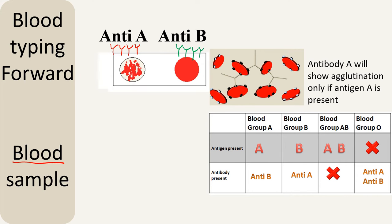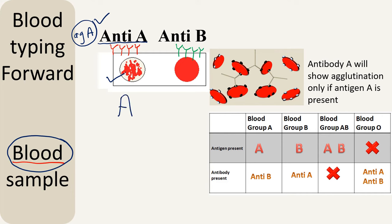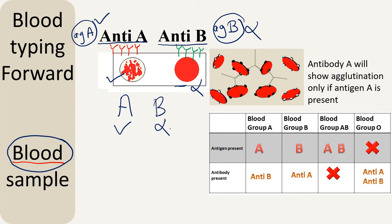We know that antibody A will only agglutinate in the presence of antigen A. Here, since we see agglutination, we can assume that this blood sample contains antigen A. Looking at the second droplet wherein we have added antibody B, there is no agglutination. We know antibody B can interact with antigen B, which means that this blood sample does not contain antigen B. So we have antigen A and we do not have antigen B. Thus, this particular person has blood group A.